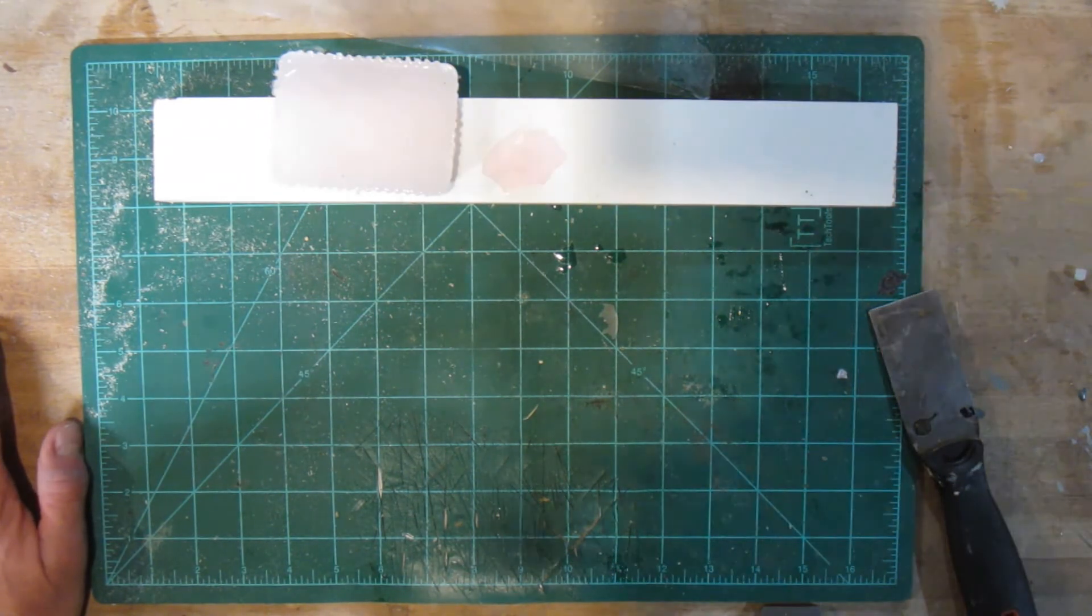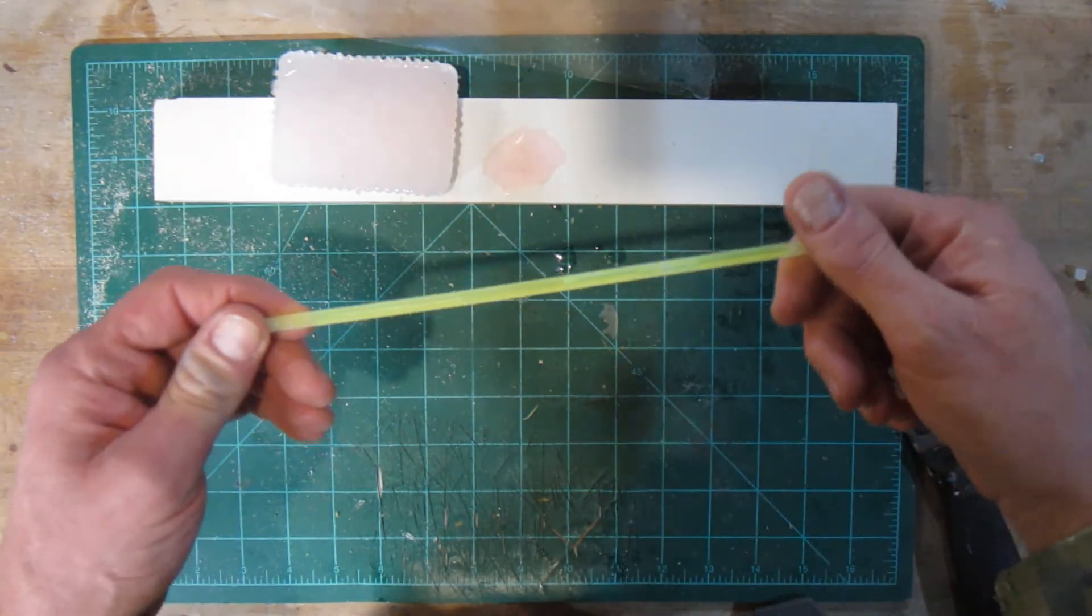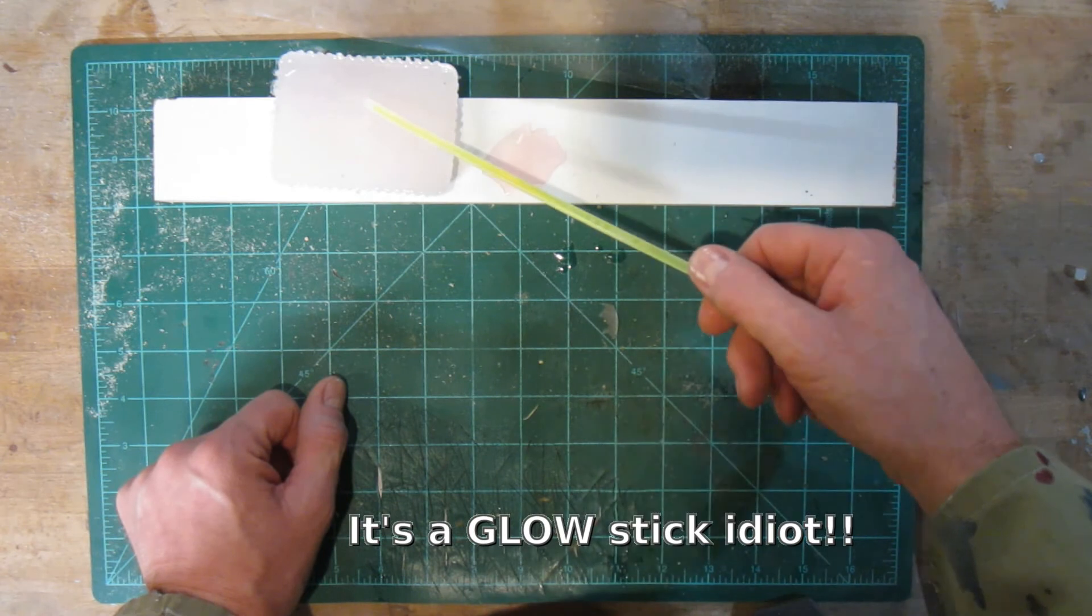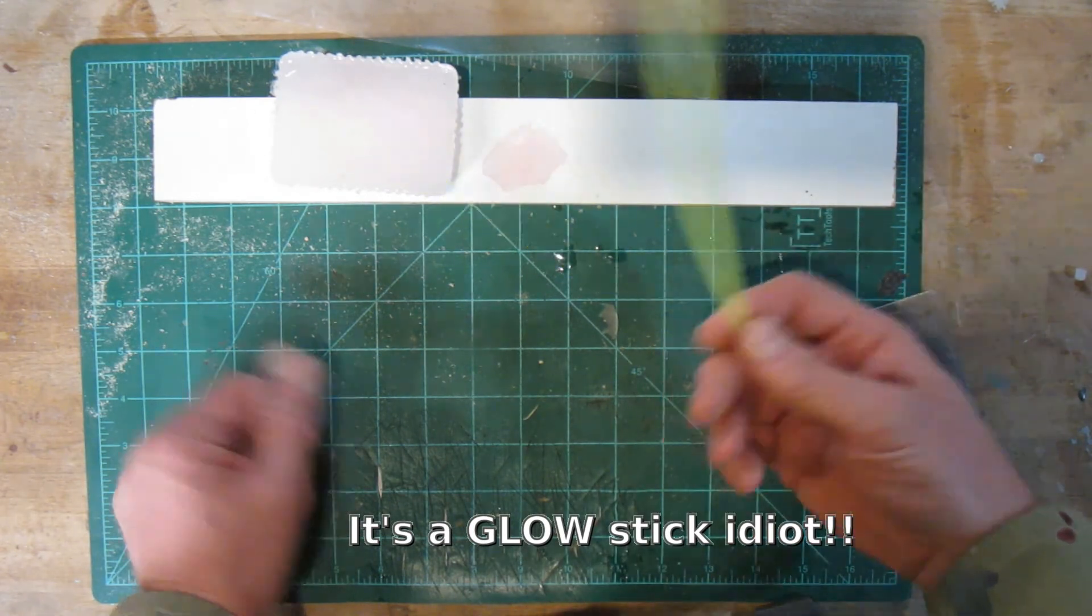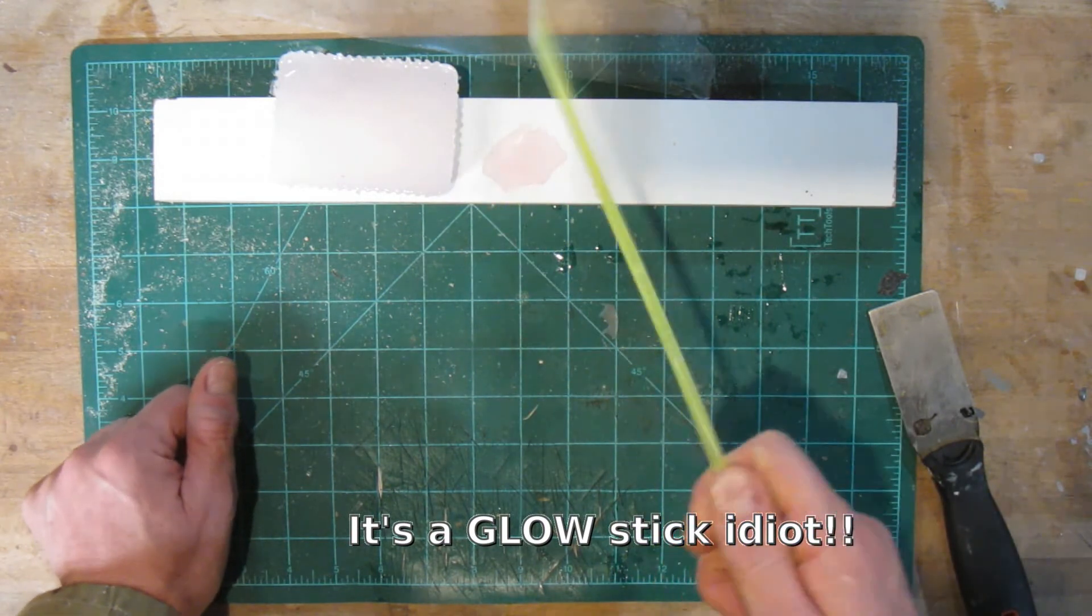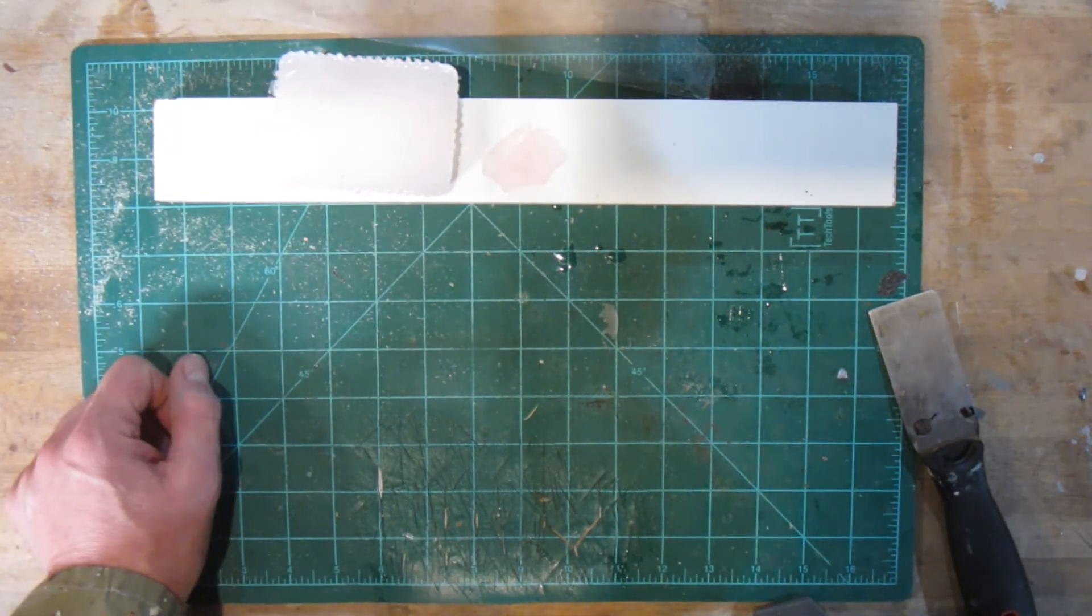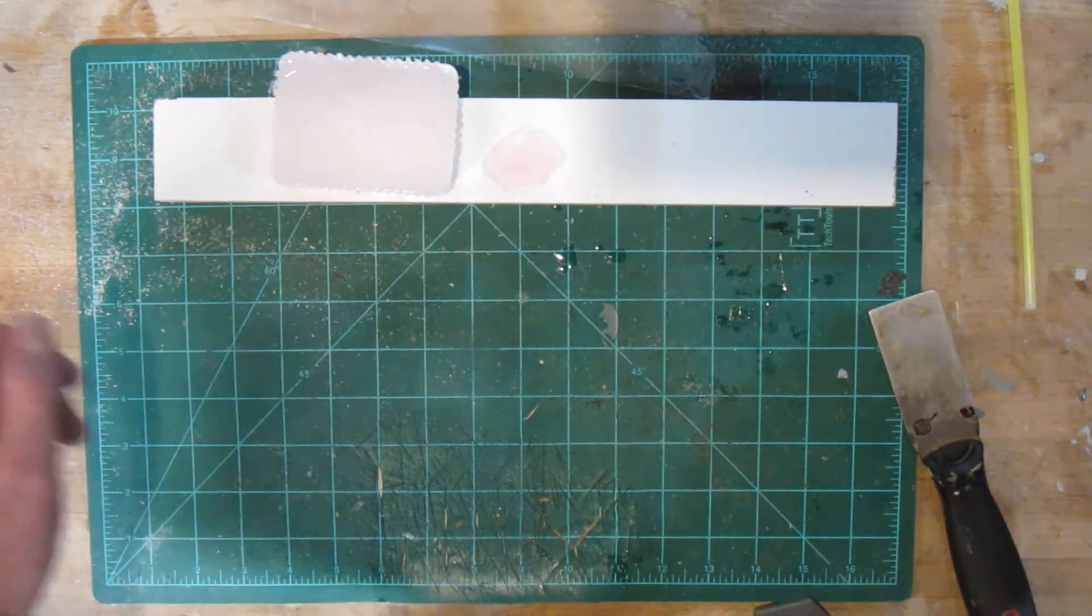I guess we can call this one solved. You can use the guts of a glow stick to soften up your plastic should you have need for that. Now I can't actually think of any particular application at this point, but you know, like most stuff, keep it in mind because you never know when you might want something like that, right? So thanks for watching, cheers.